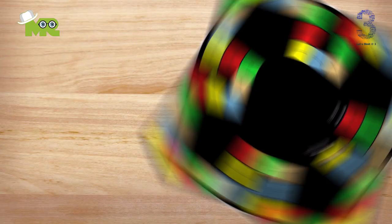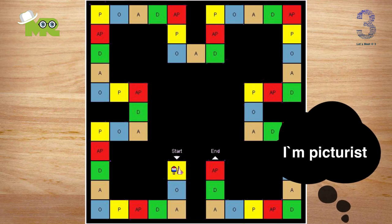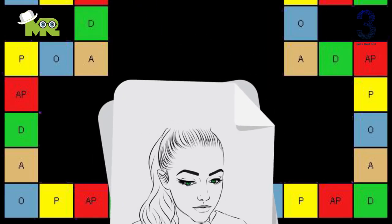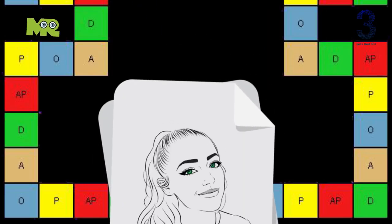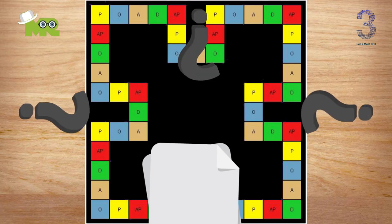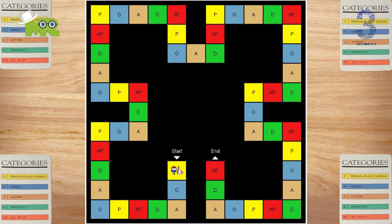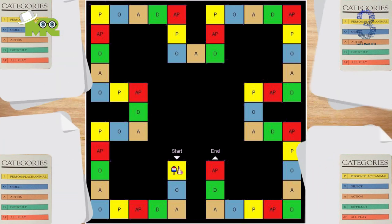Game setup. Select one person to be your picturist for the first word. The picturist is the person who attempts to illustrate the word. Everyone else on the team will try to guess the word. Each team gets a category card, a drawing pad, and a pencil.